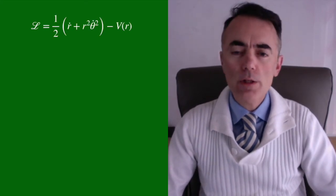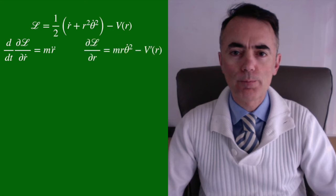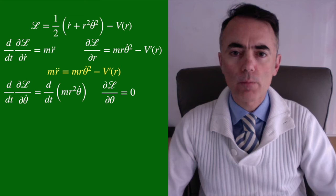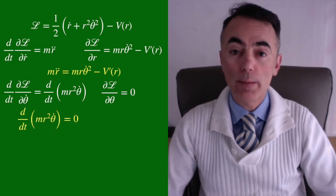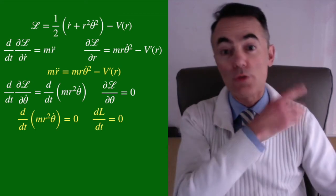From Lagrange equations, we get these two equations. The first one is F equals ma in polar coordinates with the centrifugal force. The second equation is the conservation of angular momentum, our previous result.